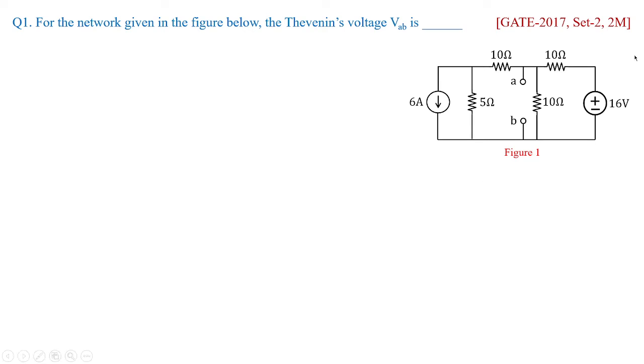We will start with the first problem which was asked in GATE 2017 under set 2 for 2 marks. The Thevenin's voltage VAB across 10 ohms. So this is a question which is having no choices.